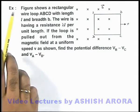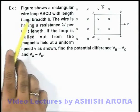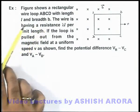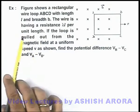In this example, the figure shows a rectangular wire loop ABCD with length l and breadth b. The wire has a resistance λ per unit length.